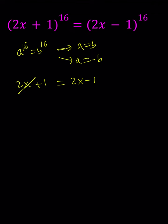So we have to go with a equals negative b, and negative b is negative 2x plus 1. One cancels out and we end up with 4x equals 0, which means x equals 0.